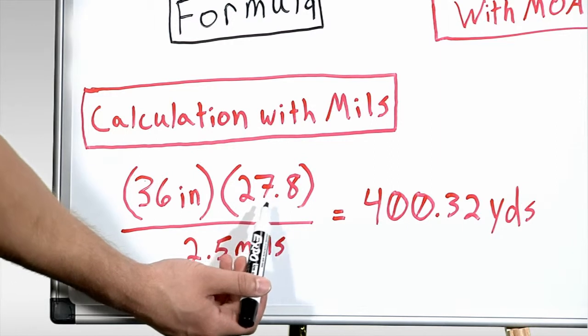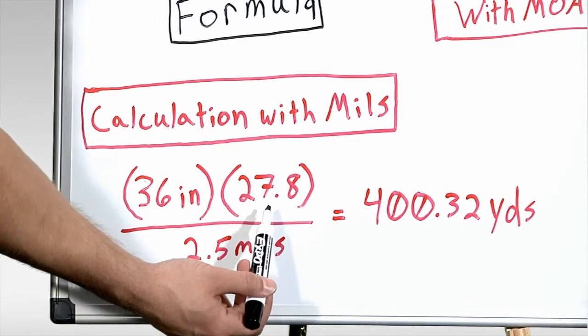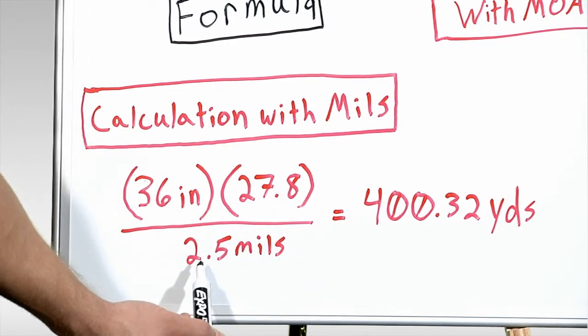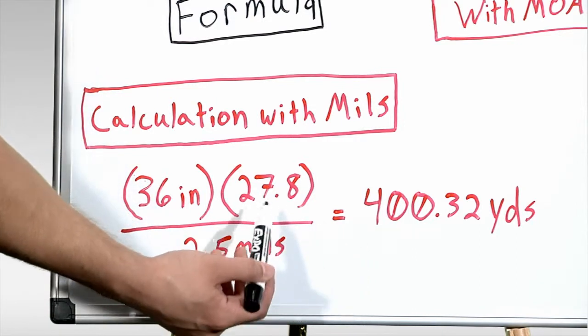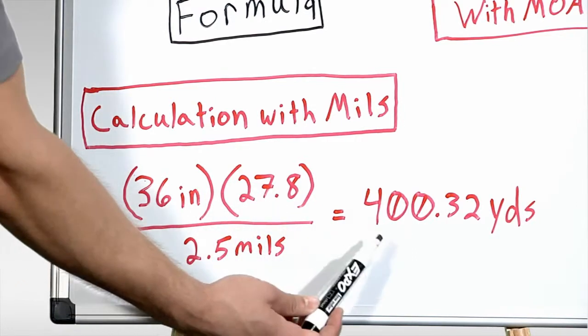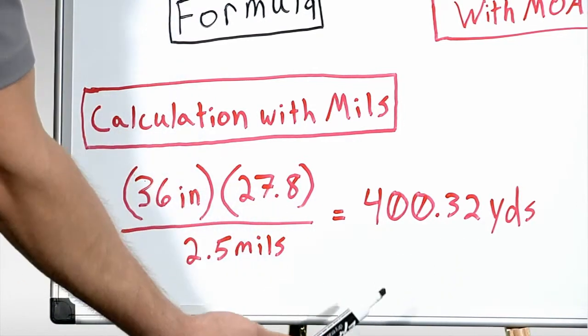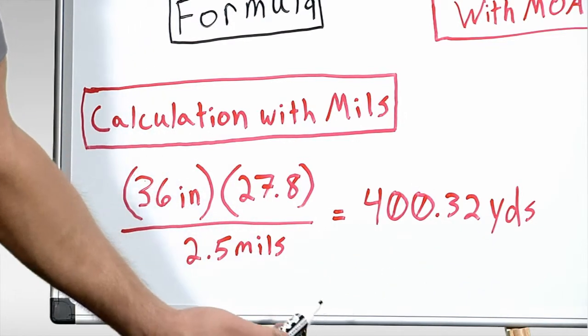We use our number, in this case, is 27.8. This is the number that keeps our inches in relation to our mils to give us an accurate yardage. And when we do this math, we see that we're given 400.32 yards, or 400 yards for the sake of simplicity.